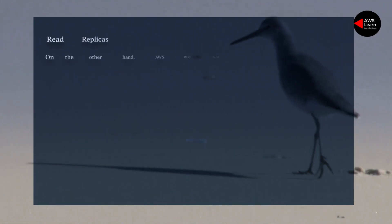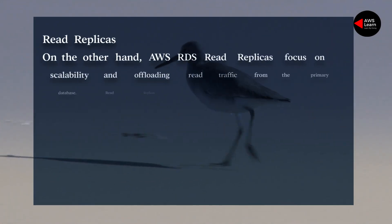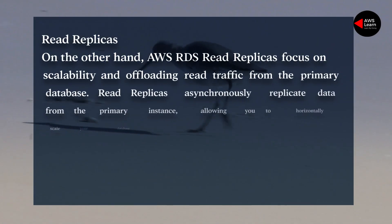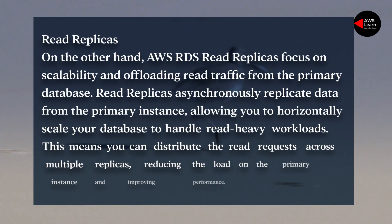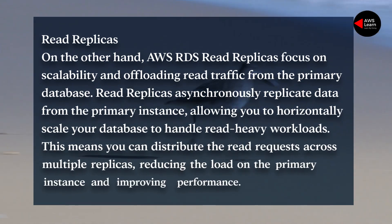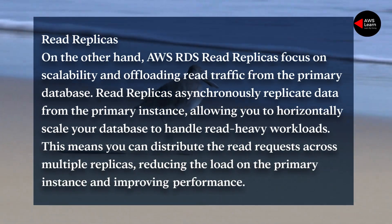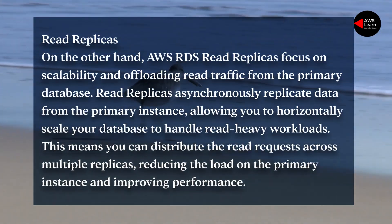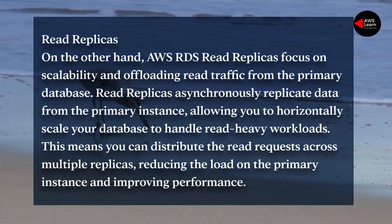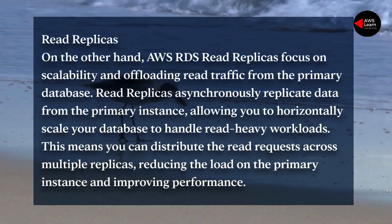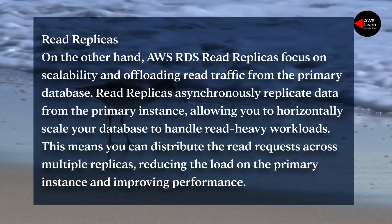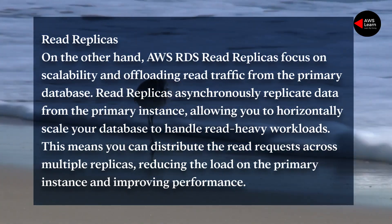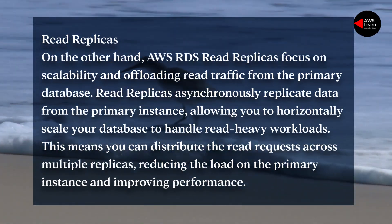Read replicas. On the other hand, AWS RDS read replicas focus on scalability and offloading read traffic from the primary database. Read replicas asynchronously replicate data from the primary instance.